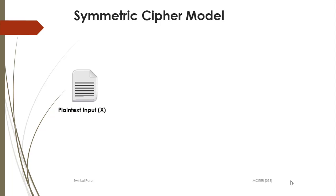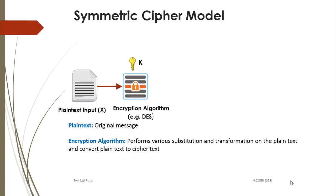In symmetric cipher model, the sender has a plaintext input x. Plaintext is the original message which has to be sent from sender to receiver. Next, on the input message, we will apply the encryption algorithm. Encryption algorithm performs various substitution and transformation on the plaintext and converts the plaintext to the ciphertext.